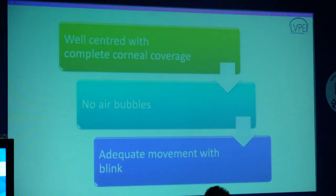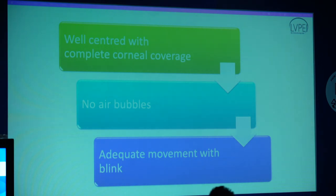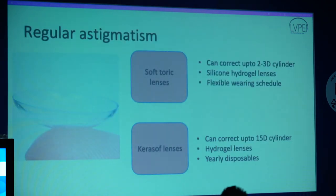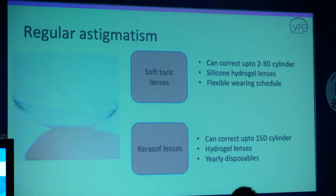When putting a BCL or soft lens, the lens must be well-centered covering the cornea, with no air bubble between corneal surface and lens to avoid dessication. Adequate movement with every blink ensures adequate tear exchange. For astigmatism, soft lenses help correct both regular and irregular astigmatism. Soft toric lenses made of silicon hydrogel can correct up to 2–3 diopters of cylindrical power, while cerasoft lenses can correct up to 15 diopters but are made of hydrogel and are yearly disposable.